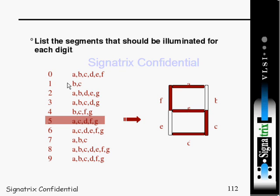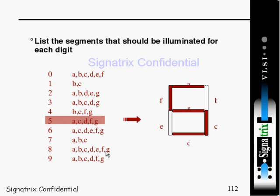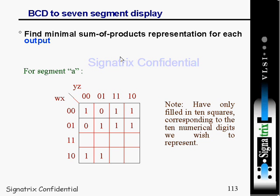Here is the list of segments that should be illuminated for each digit. For example, when displaying 0, segments a, b, c, d, e, and f are 1. You can see the decoded variables — which should be 1 and which should be 0. The segments are labeled a, b, c, d, e, f, and g. For digit 5, you need a, c, d, f, and g — that is the decoded information for all variables.